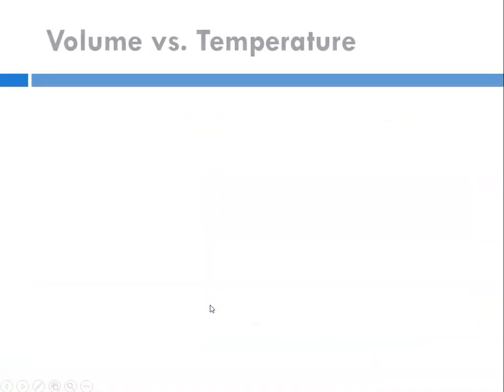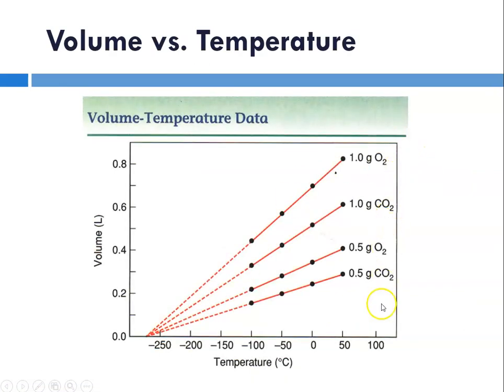And he repeated these experiments with every gas he had available to him. So here you'll see a variety of gases, and what he noted was that the temperature where the volume is zero for gases is always -273.15 degrees Celsius. So that's how the value for absolute zero was determined, noticing that as the volume goes to zero that always corresponds to zero volume at a temperature of -273.15.